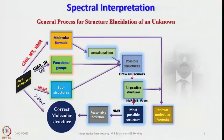The general process for structure elucidation of an unknown sample involves several avenues. Before that we have to ensure that we have a pure compound, even by physical measurements such as melting point, boiling point, and similar techniques, to tell whether the compound is pure or not. Our objective is to make compounds in their purest form, and purity can be assessed and identity can be found from spectral interpretation, always using more than one type of spectroscopic or analytical means.